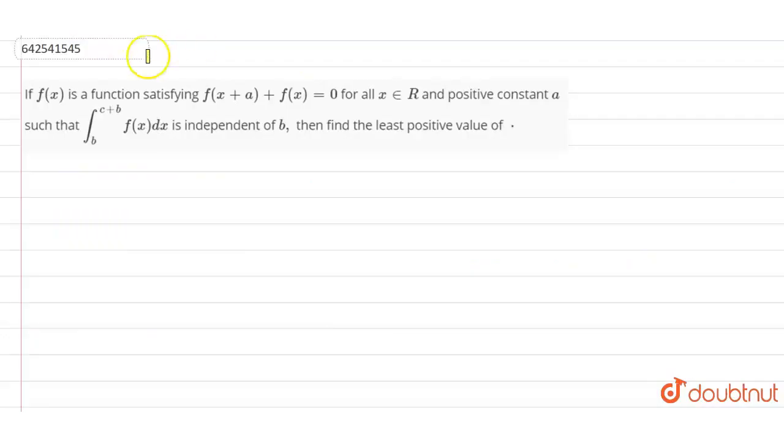Okay guys, let's solve this question. f(x) is a function satisfying f(x+a) + f(x) = 0 for all x belongs to R and positive constant a such that integration b to c+b of f(x)dx is independent of b. Then find the least positive value of c. So let's solve this question.